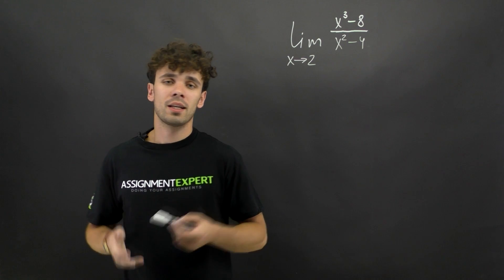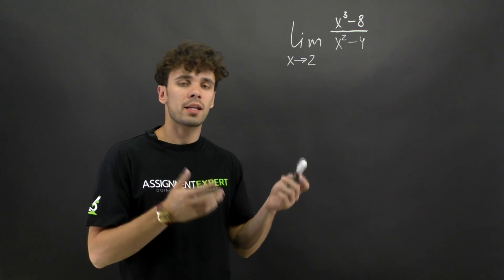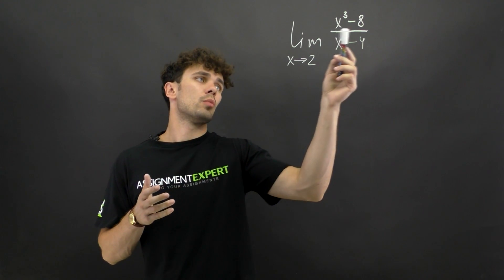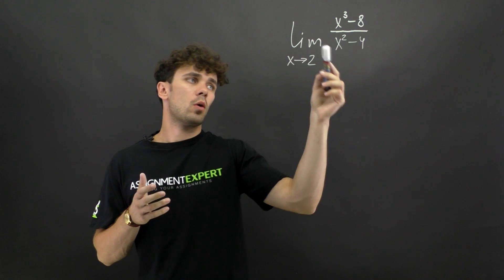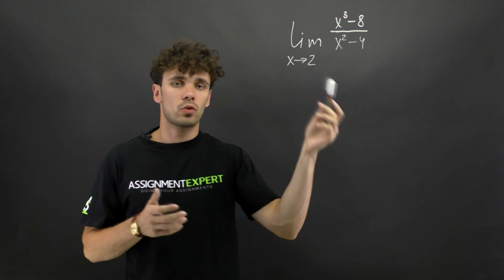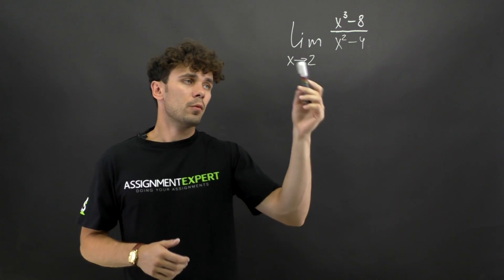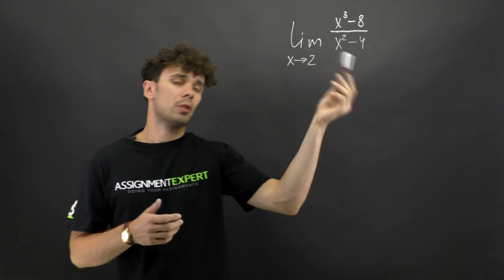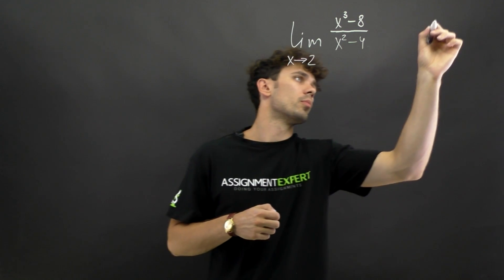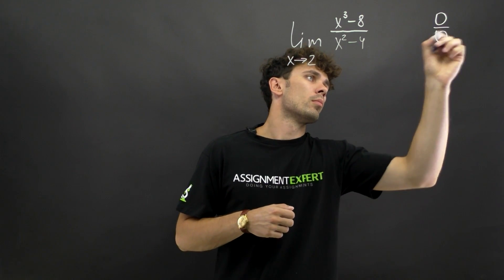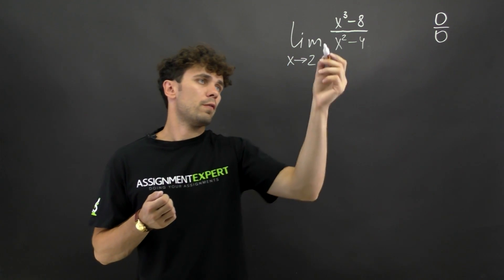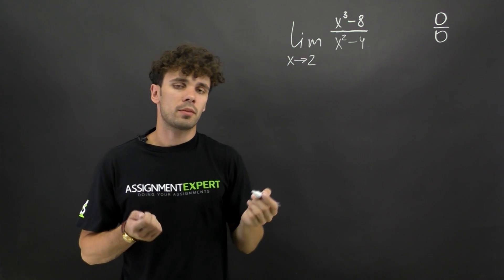Here's our last limit for today. We have x cubed minus 8 over x squared minus 4 as x tends to 2. If we insert 2 into our limit we will get 0 over 0, so once again we need to factor the function under the limit sign.